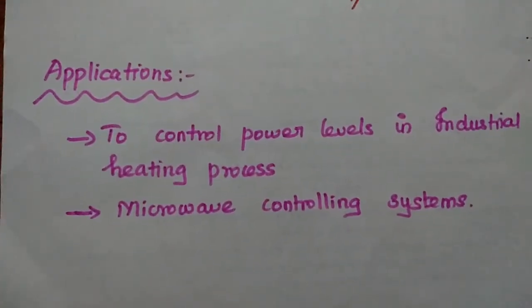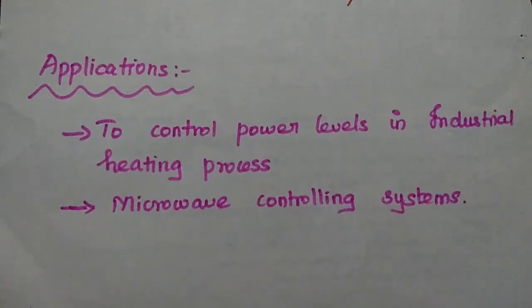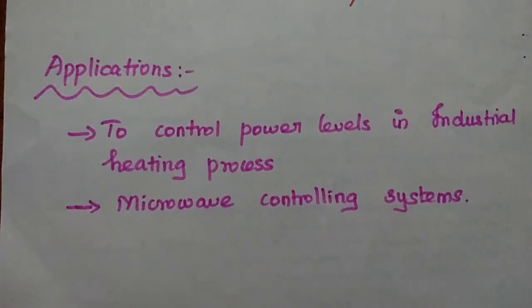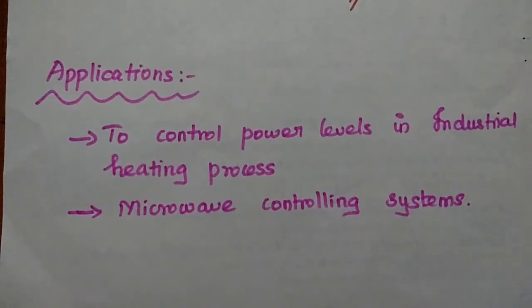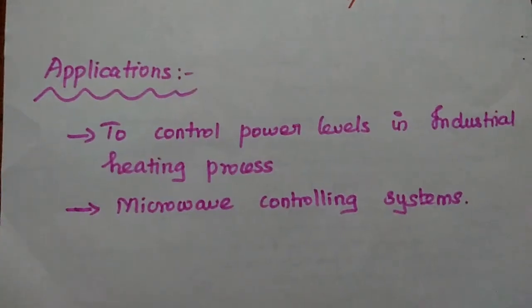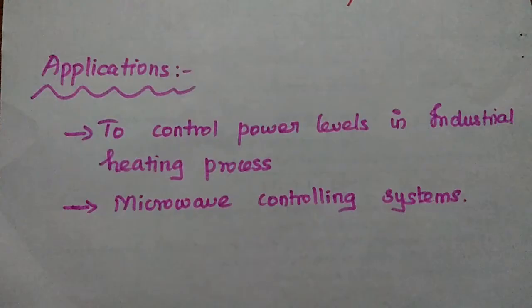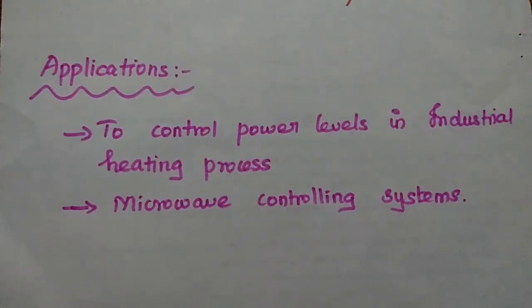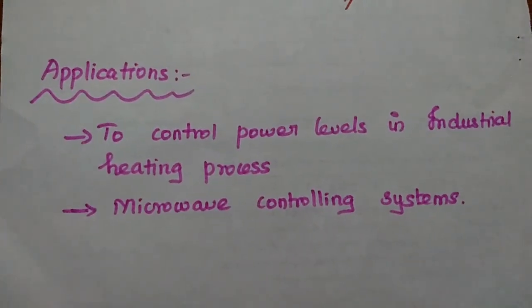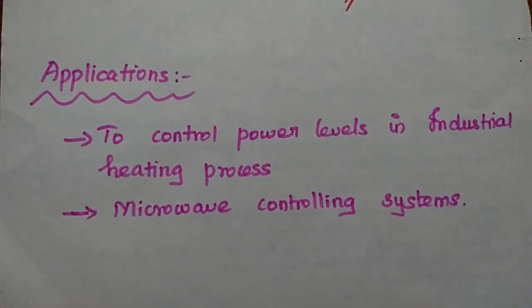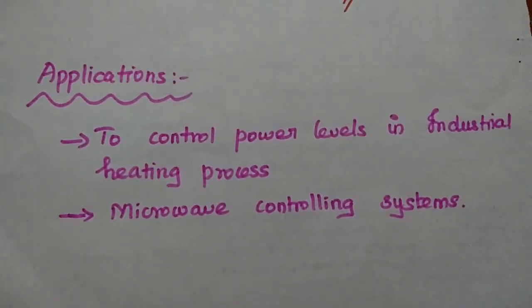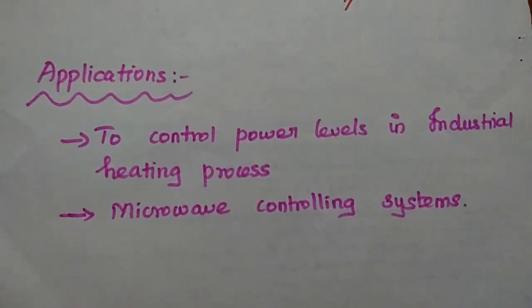Applications of microwave attenuators: these attenuators are widely used to control power levels in industrial heating processes, and are especially used in microwave controlling systems.